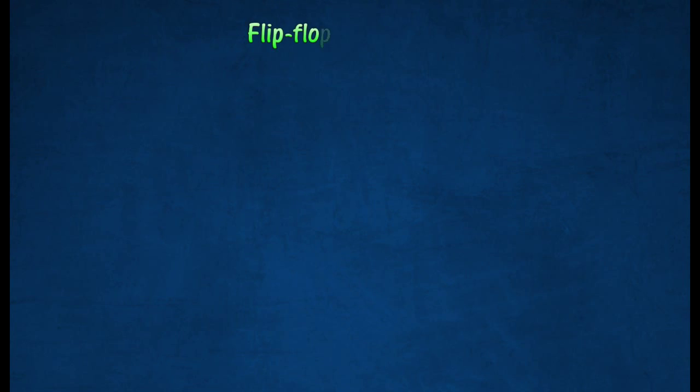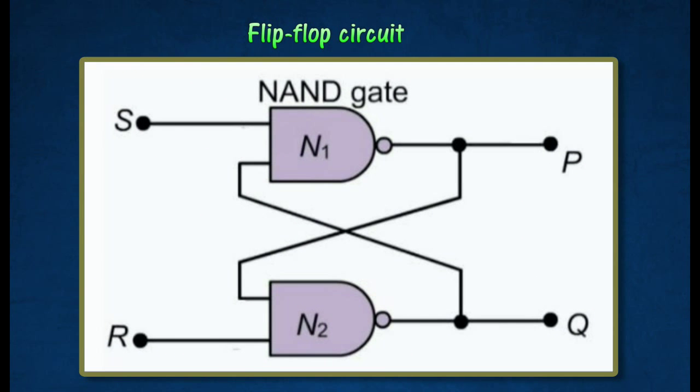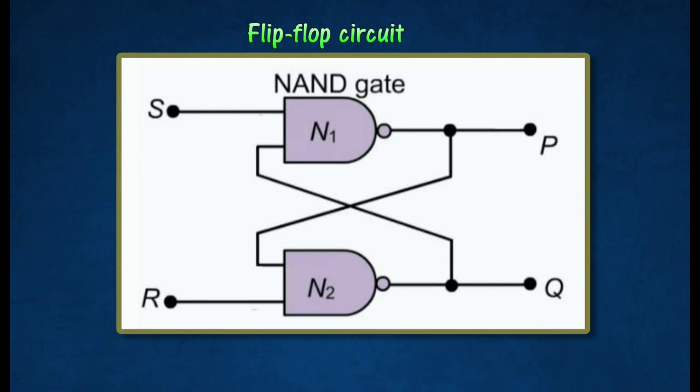A flip-flop circuit is built from two NAND gates connected by crossing each other. The two stable states that are interchangeable in a flip-flop circuit are set (flip) and reset (flop).